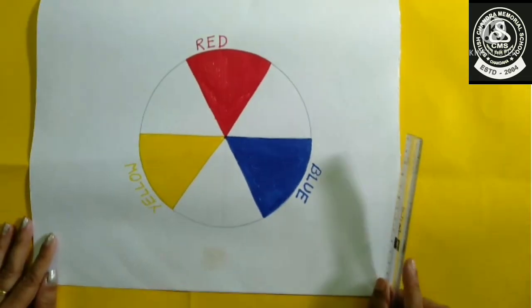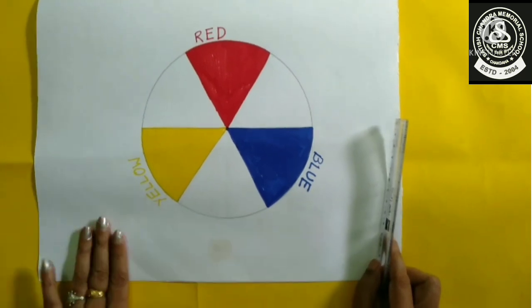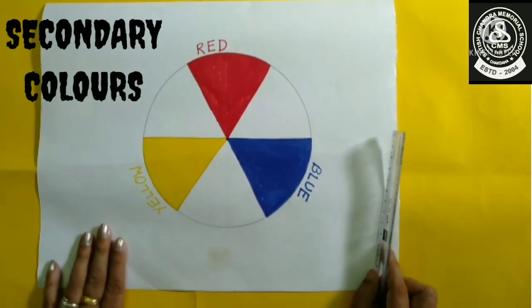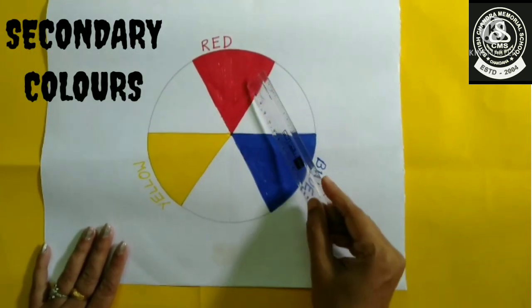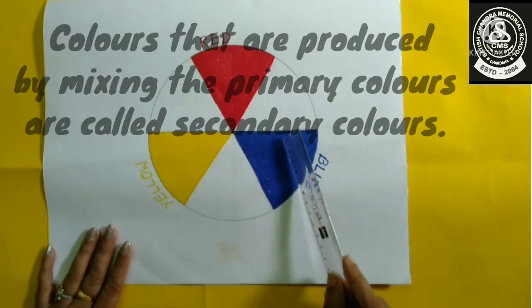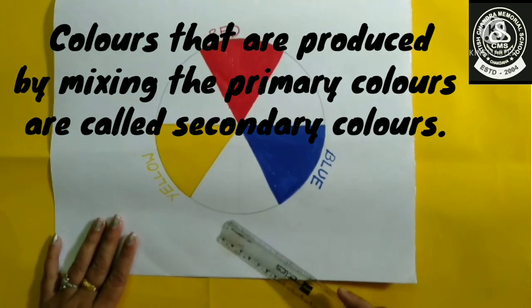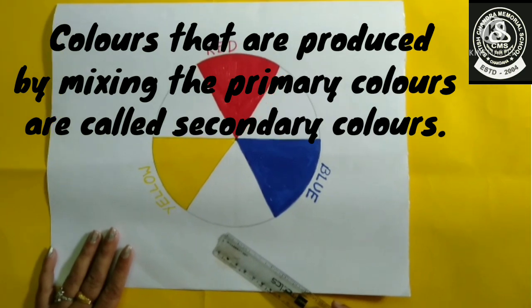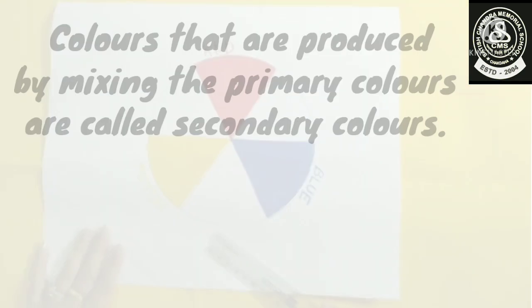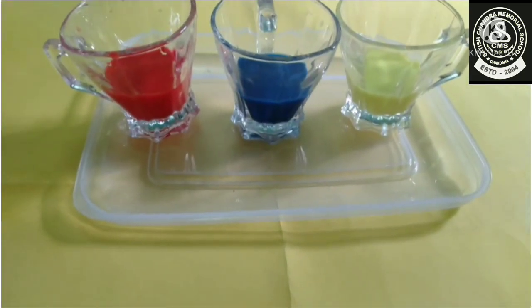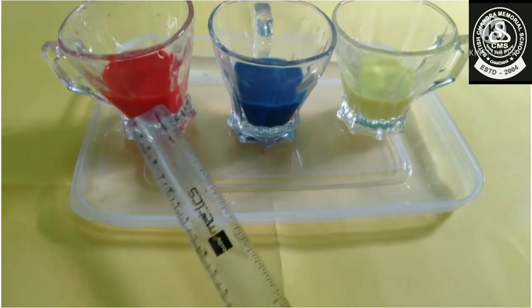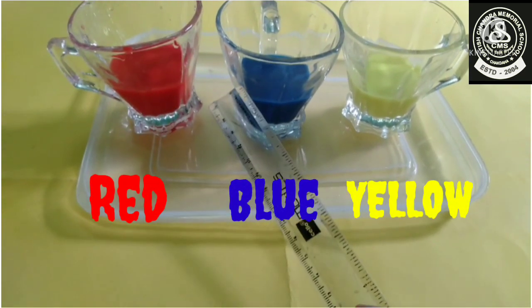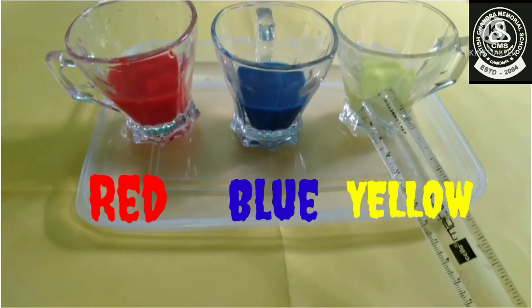Now today in this class we will learn about the secondary colors by mixing the primary colors one by one. Here we have three cups containing the three primary colors: red, blue, and yellow.